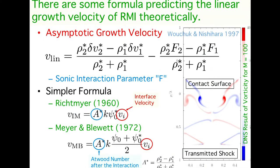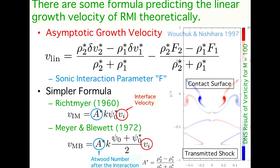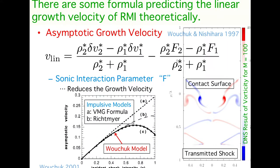The first term of the Volchok-Nishihara formula is derived from the tangential velocity. The second term becomes important when the shock Mach number is very large and includes the effect of sound wave propagation between the interface and the shock surface. Compared with the simple formula, which is typically given by the Atwood number and interface velocity, the Volchok model gives a lower velocity due to the compressive effect. We use this formula in our analysis.